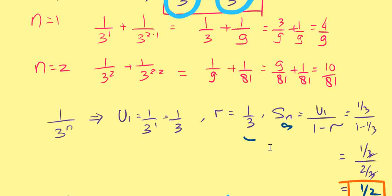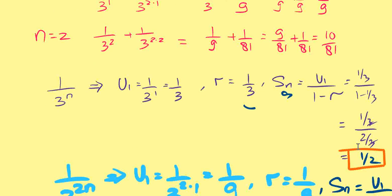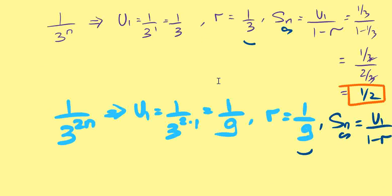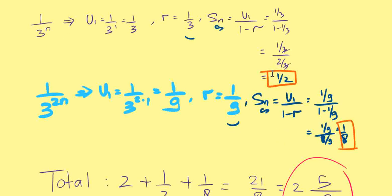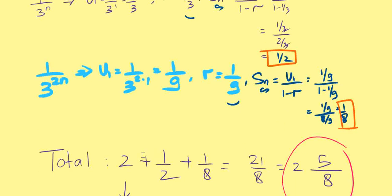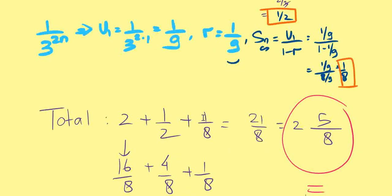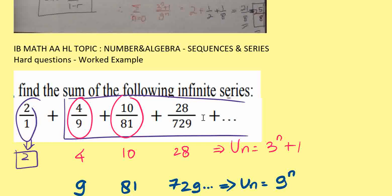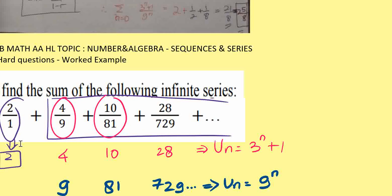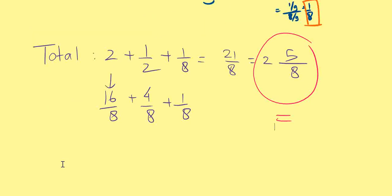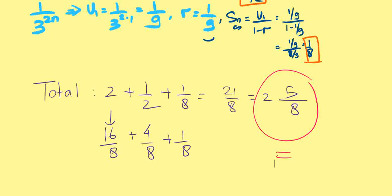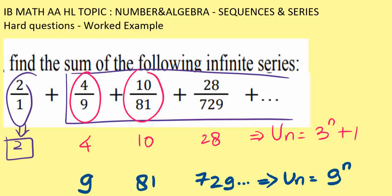The infinite sum of the first part is 1 over 2, and the second part is 1 over 8. Adding those together with the 2 we kept at the front, we get 2 and 5 over 8 as our final answer.